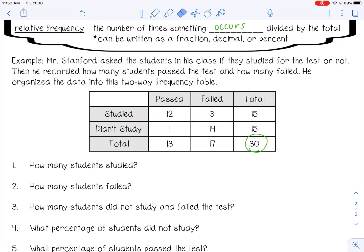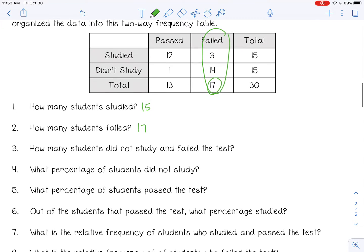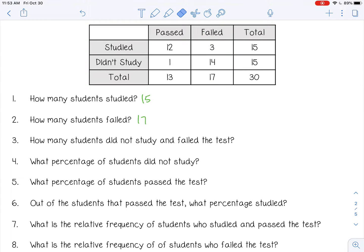Let's answer these questions. How many students studied? We're going to look just at the studied row. That would be 15 total. How many students failed? That would be here. So 17 students total failed. How many students did not study and they failed the test? So they didn't study and they failed. That would be here at 14.